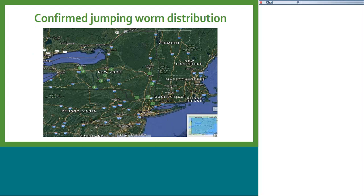Here's the confirmed jumping worm distribution — we don't have much data at all. It's spread somewhat throughout New York State, but we don't know a lot. It's in Syracuse and Rochester, but what about the space in between? We have this competition to fill in that data gap. We want folks to go out in their backyards or wherever they're going this summer, to look and report if it's there or not — so we know where it is, where it's going, and can really fill in those blanks.